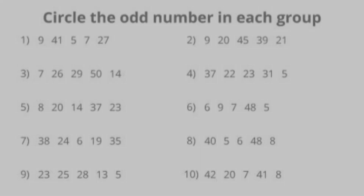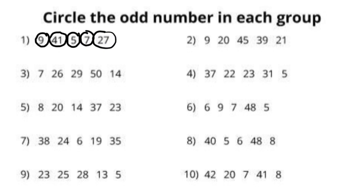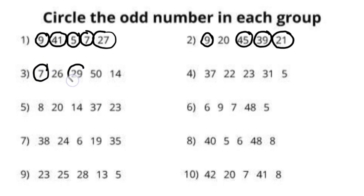Now, similarly, let us circle the odd numbers in this worksheet. In question number 1, all the numbers given — that is 9, 41, 5, 7, and 27 — are all odd numbers, so circle all of them. In question number 2, 9, 45, 39, and 21 are the odd numbers. In question number 3, 7 and 29 are the odd numbers.